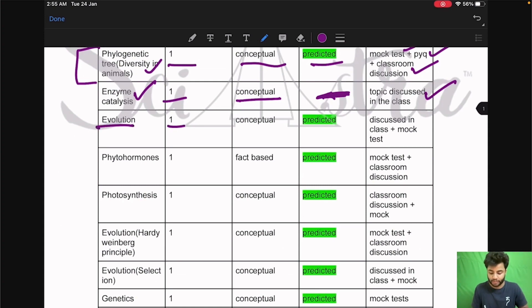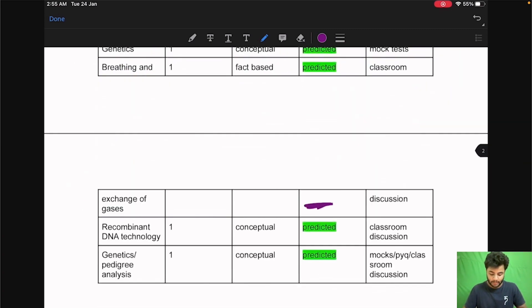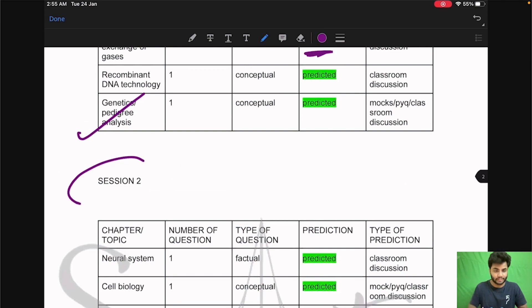Then phylogenetic tree diversity in animals. From that chapter one question came conceptual question already predicted given in the mock test previous year paper as well as the classroom discussion. Then enzyme catalysis. One question came conceptual. It was not predicted. Topic was however discussed in the class. Then evolution. One question conceptual already predicted. If you see my videos of most important topics and chapters for biology section NEST 2022 you will find all of these predictions coming true. Already discussed in the class and the mock test. Then phytohormones. One question fact-based predicted already. It came in the mock test as well as the classroom discussion of Sciastra. Then photosynthesis. One question conceptual.